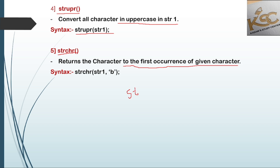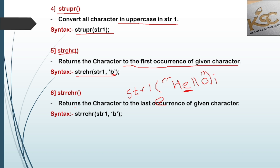Suppose a string str1 is given, for example 'h e l l o'. We can use strchr to find the first occurrence of a given character. If we give character 'e', the function returns the position of the first occurrence of 'e'. Syntax: strchr(str1, character). There is also strrchr, which returns the last occurrence of a given character. Syntax: strrchr(str1, character).